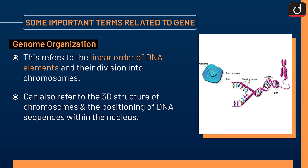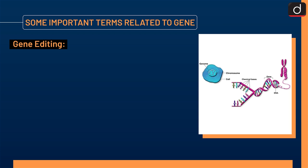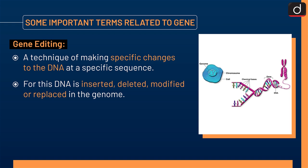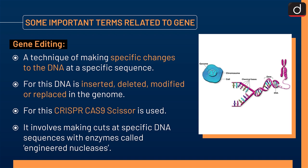Next is gene editing. It is a technique of making specific changes to the DNA at a specific sequence. For this, DNA is inserted, deleted, modified, or replaced in the genome. For this, CRISPR-Cas9 is used. It involves making cuts at specific DNA sequences with enzymes called engineered nucleases.